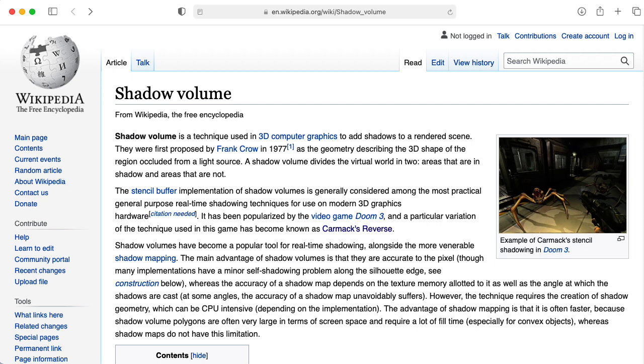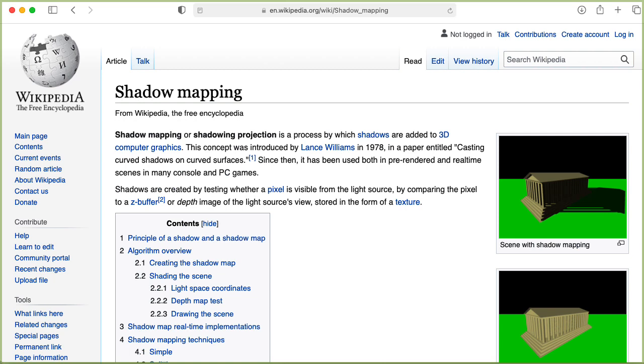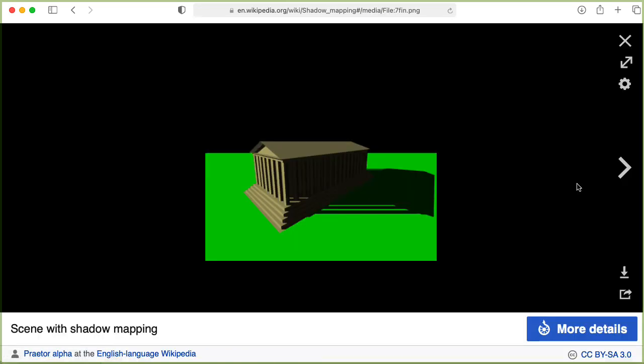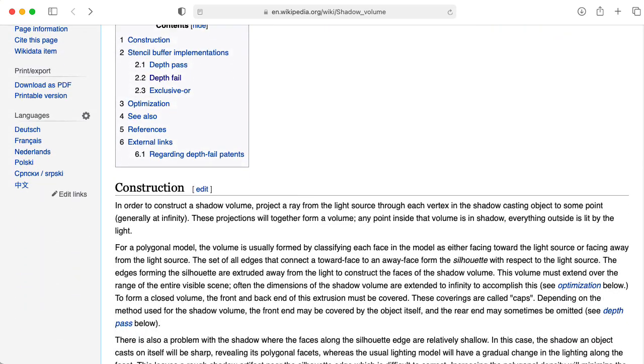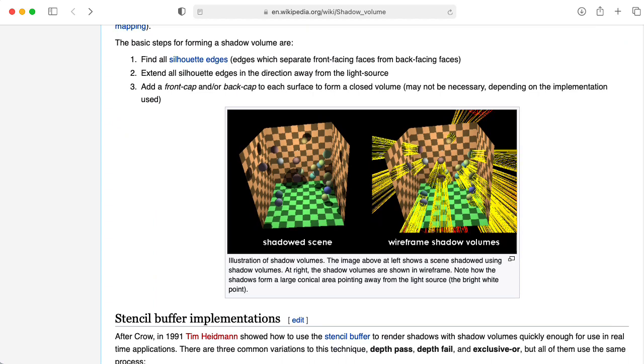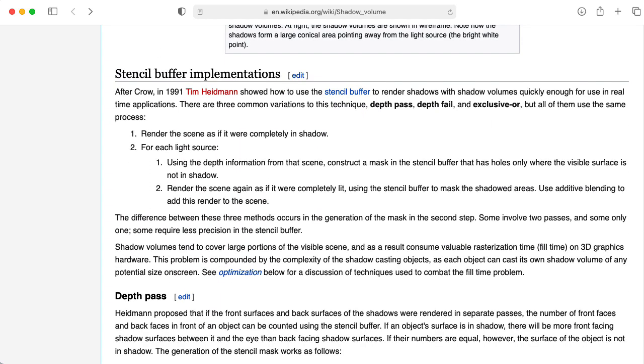But I'm not aware of any modern mainstream game engine that uses them. If you know of one, please let me know in the comments below. Nowadays, most game engines use a technique called shadow mapping that's well-supported by modern GPU hardware. So shadow volumes that tend to involve a lot of computation on the CPU have kind of gone by the wayside.